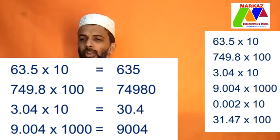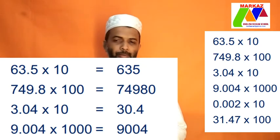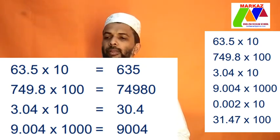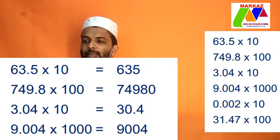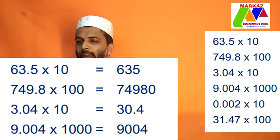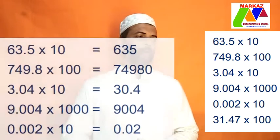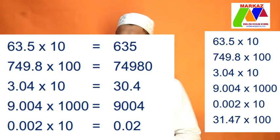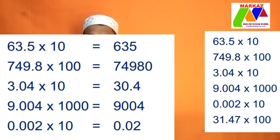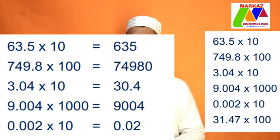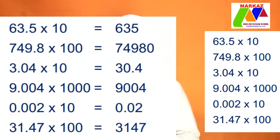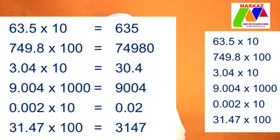Next, 0.002 into 10. Multiplication with 10, so move one decimal place to the left. Next, 31.47 into 100. Multiply with 100, move two decimal places to the left. So, answer is 3147.